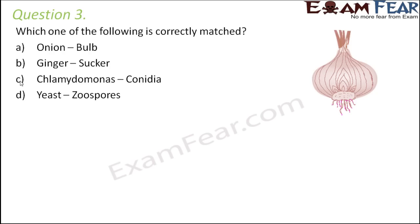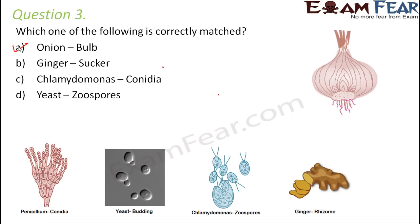In case of onion, the stem modification is called bulb — so onion–bulb is correctly matched. For ginger, the modification is known as rhizome, whose purpose is food storage. So ginger is not sucker; ginger is rhizome. That pair is incorrect.